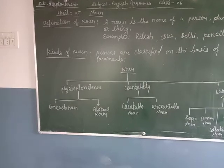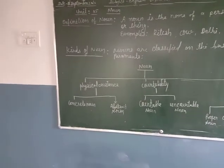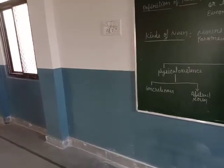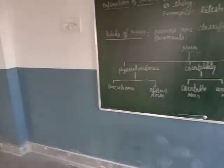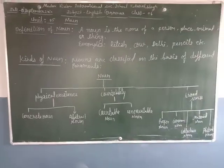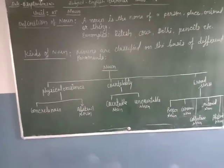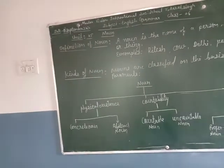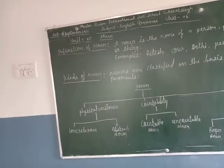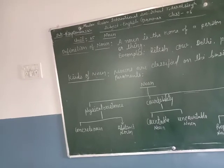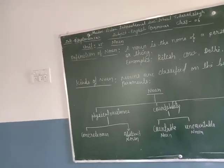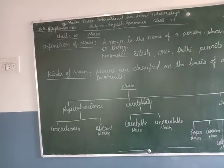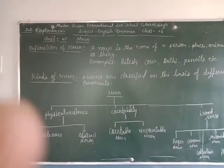Abstract noun: these have no physical forms or shapes, and these can't be touched. These are qualities, feelings, emotions, or a state in which something is. For example: joy, sorrow, kindness, happiness, fight, etc. These are examples of abstract noun.